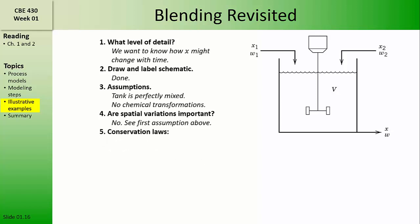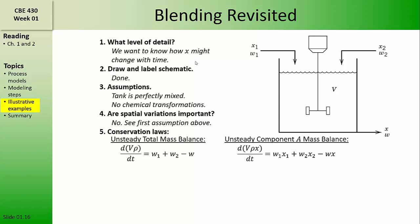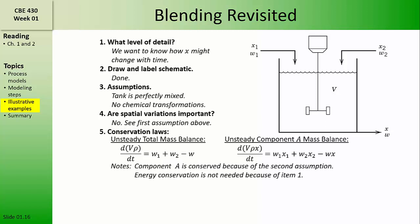Then, we can apply the relevant conservation laws. Since we want to know how x changes with time, we're probably going to need a total mass balance and a component A balance. Here, we'll write dynamic model equations, which permit the accumulation terms to be non-zero, and we won't use the steady state values of any of the process variables. Note that in the component A balance, we do not include a generation or consumption term, because component A must be conserved when there are no chemical reactions occurring, consistent with our list of assumptions.